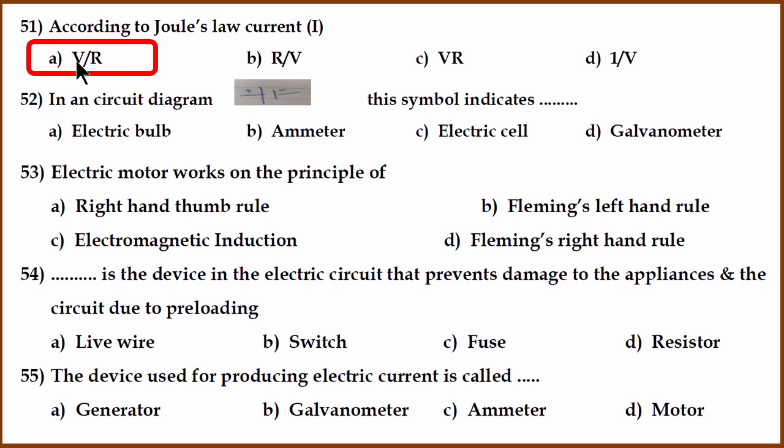Now the 52nd question in the circuit diagram, this is an electrical cell. It's not a bulb or an ammeter or a galvanometer. It's just an electric cell.